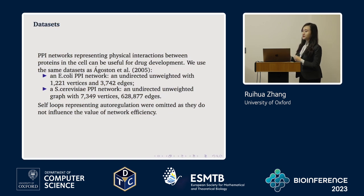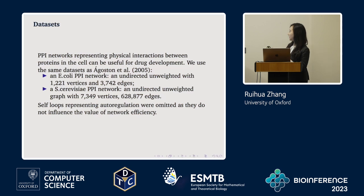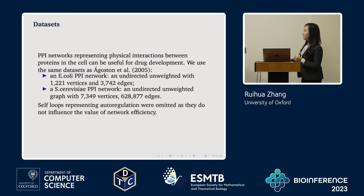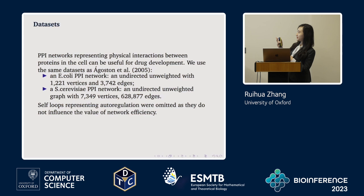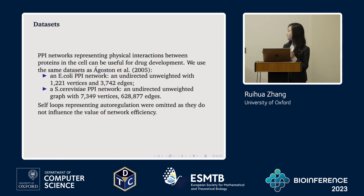We ran simulations comparing the new model, the standard duplication divergence model, and real datasets. The two groups of datasets used are the E. coli PPI network, which is an undirected and weighted network, and the yeast PPI network. The proportion of vertices to edges indicates these networks are very sparse, meaning many isolated vertices exist — which is why we focus particularly on the number of isolated vertices in our simulations.